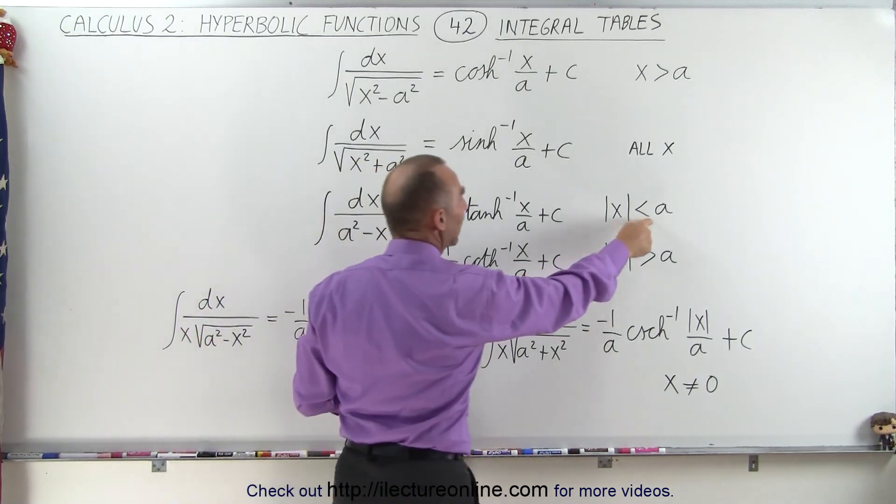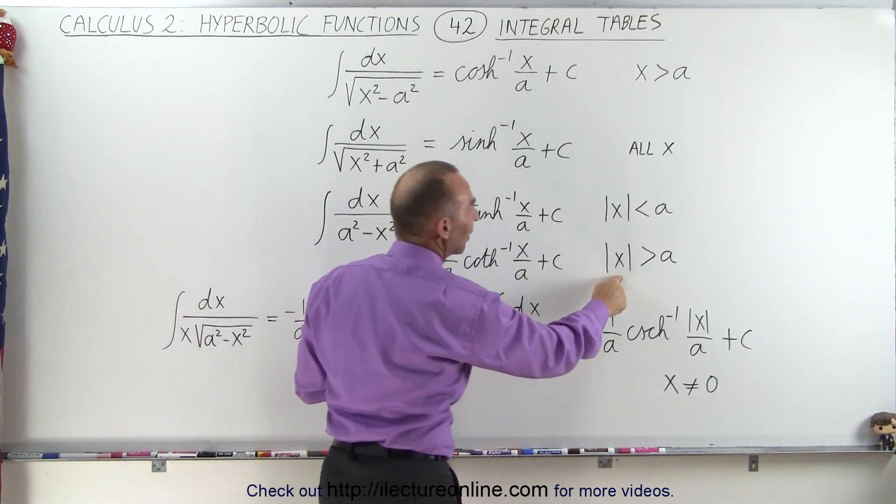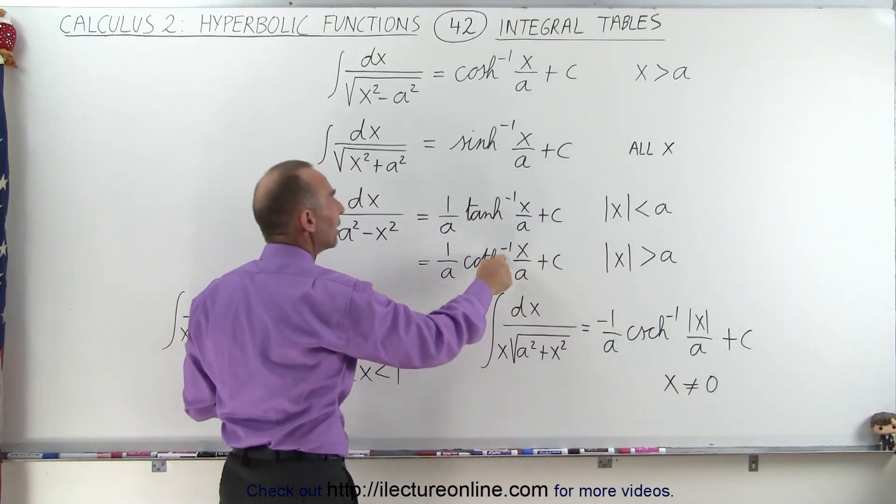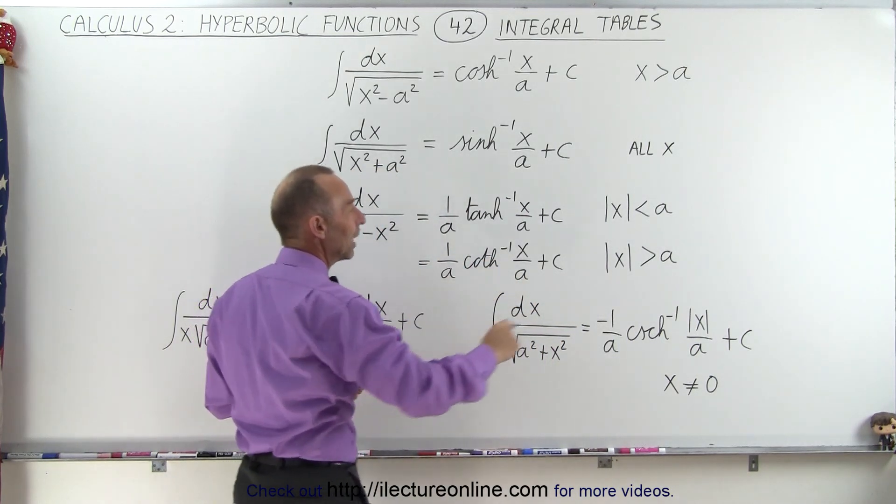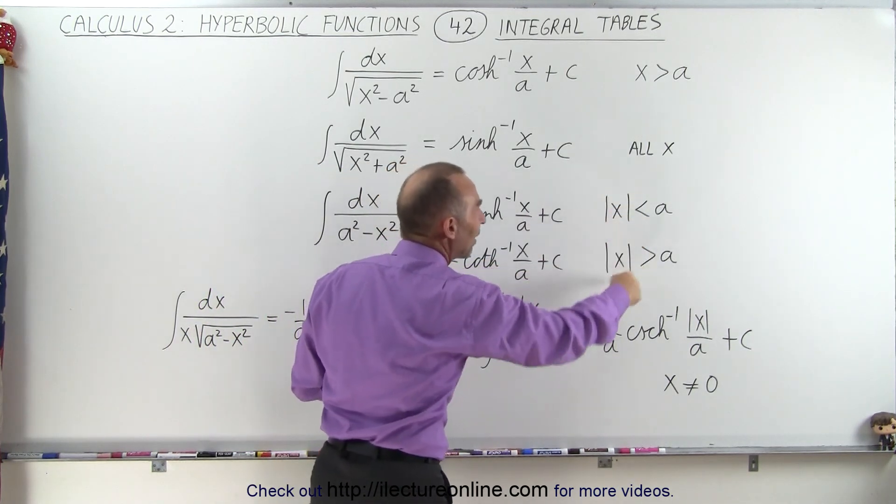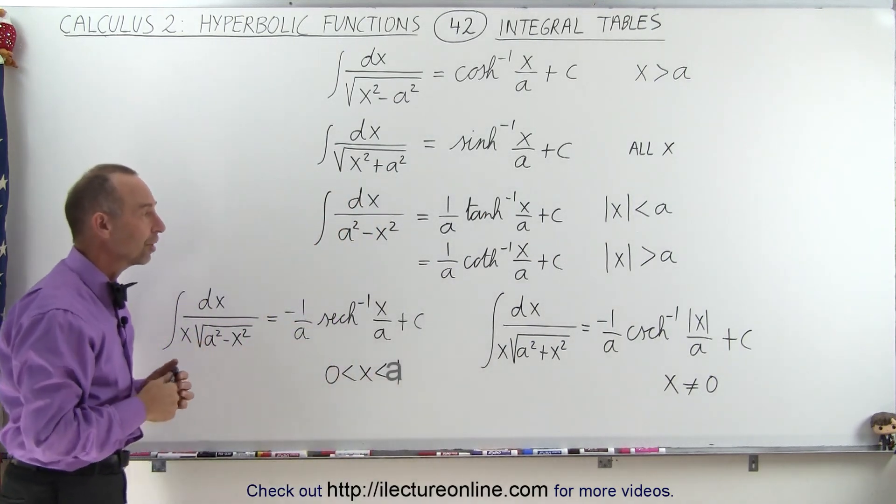If x is smaller than a, we use the inverse hyperbolic tangent. If x is larger than a, we use the inverse hyperbolic cotangent. And we are indeed saying the absolute value of x being smaller than a or larger than a.